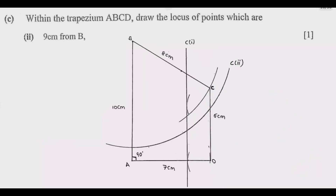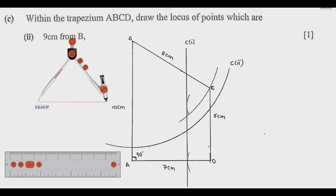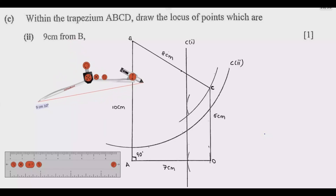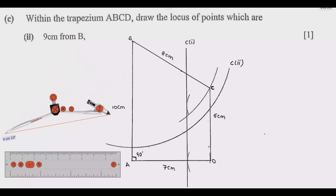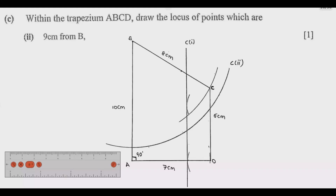Next, within the trapezium ABCD, draw the locus of points which are 9 cm from B. You need the compass and the ruler. Extend the compass to 9 cm. Come to point B and make an arc which will be 9 cm from B. All the points on that arc are 9 cm from B. Once you finish that, it will look clean and you would have gotten that one mark.